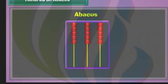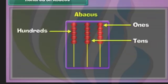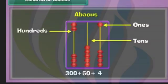Look at this abacus. It has three strings, and each string represents a position. The rightmost string represents the ones place, the next represents the tens place, and the leftmost represents the hundreds place. The beads in each string represent the value at each position. There are three beads in the hundreds string, five in the tens string, and four in the ones string. The number represented by the abacus is 300 plus 50 plus 4, which equals 354.